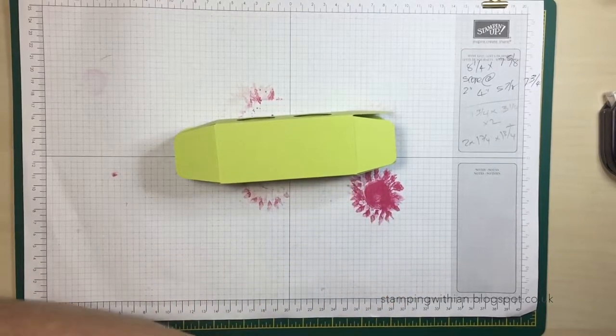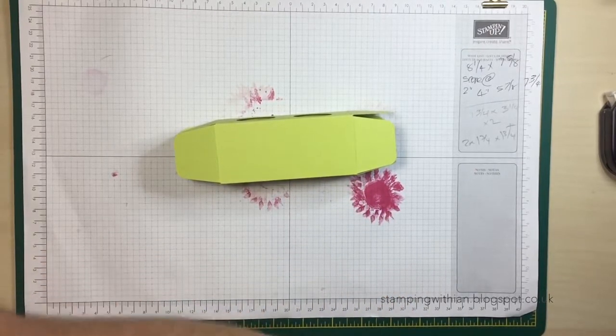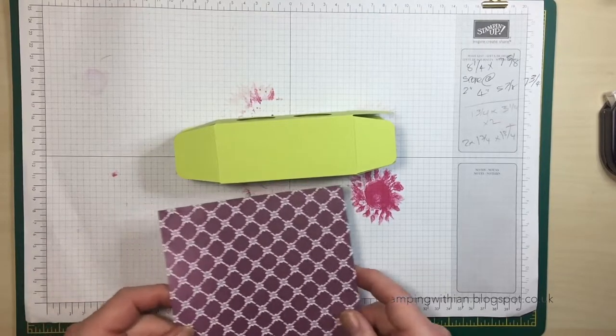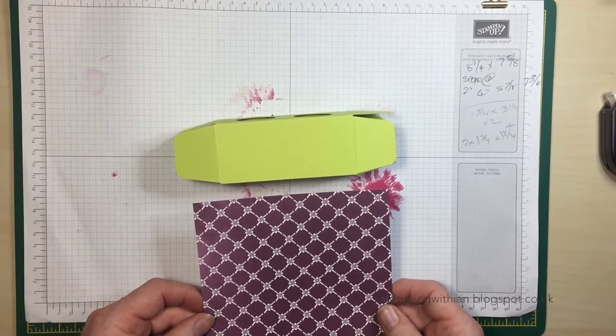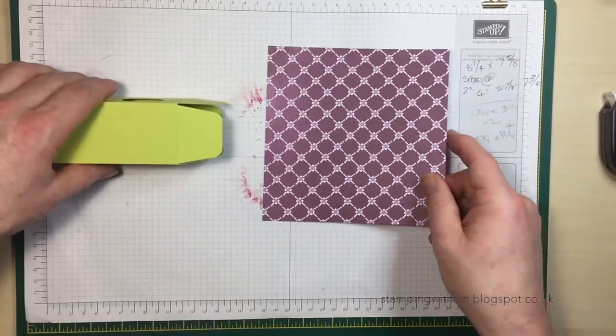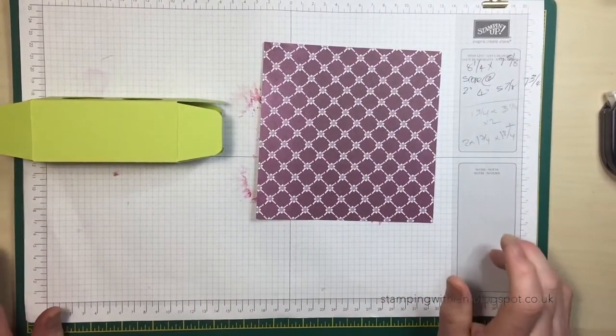So this is Lemon Lime Twist. I'm going for another color. This is Fresh Fig. So I'm going to need two pieces.